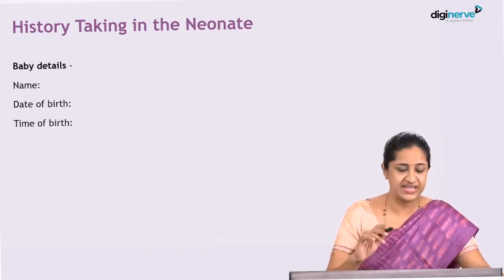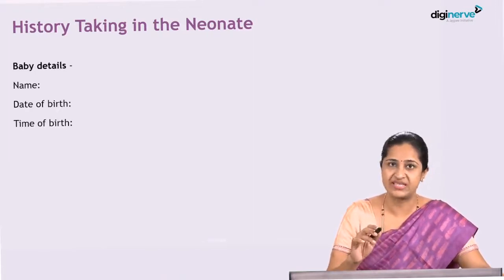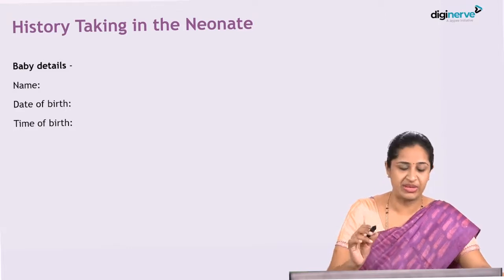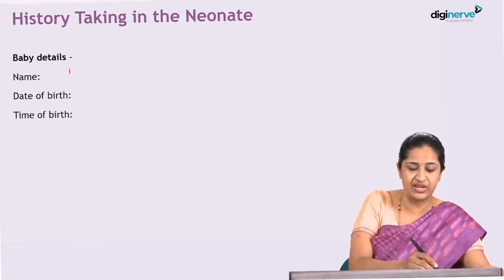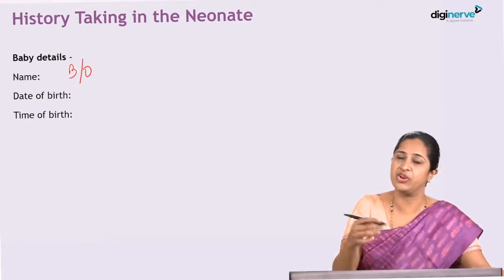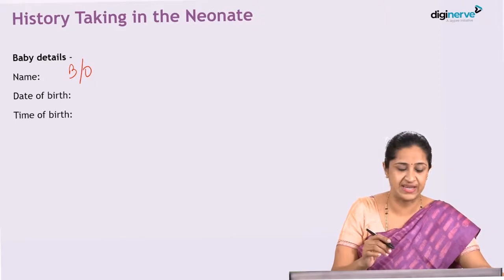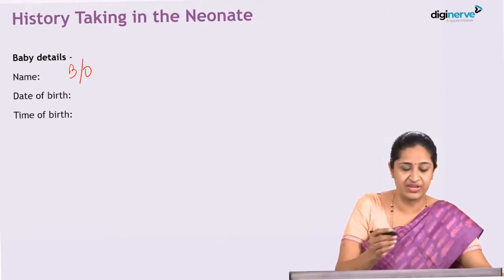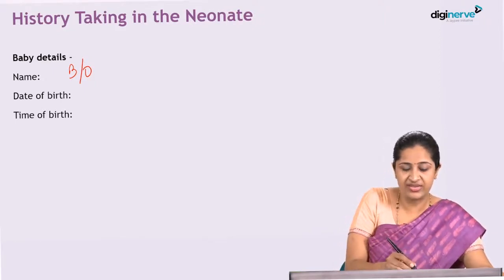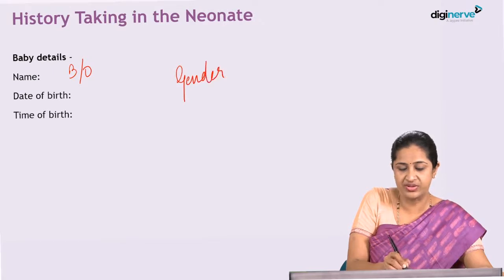First is the baby details: name of the baby — essentially 'baby of' followed by the mother's name — date of birth, time of birth, along with the gender of the baby, which is important.